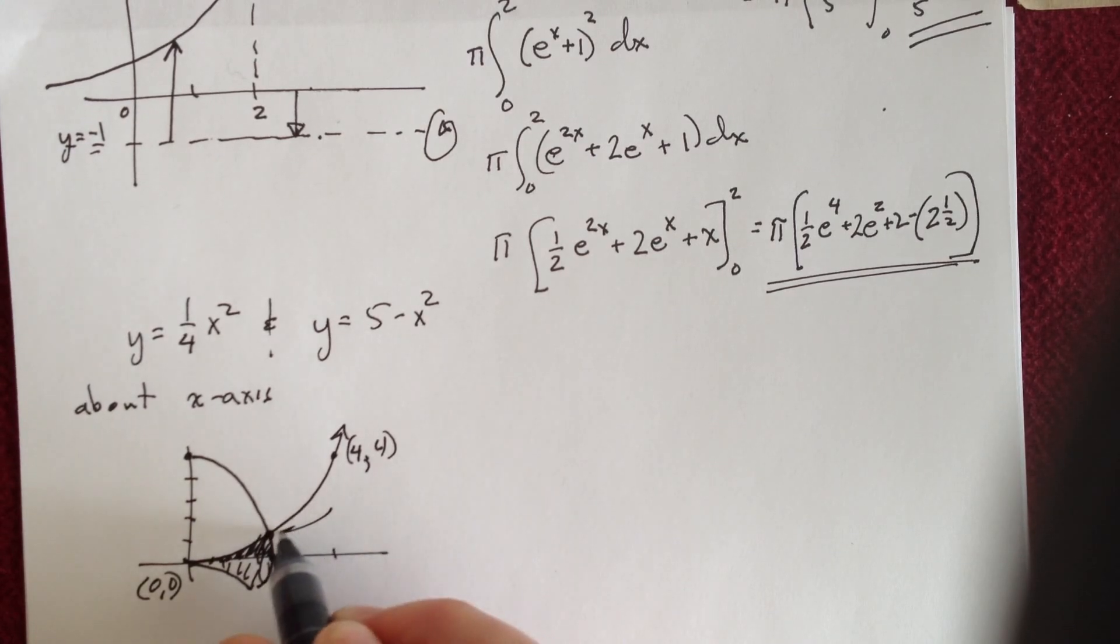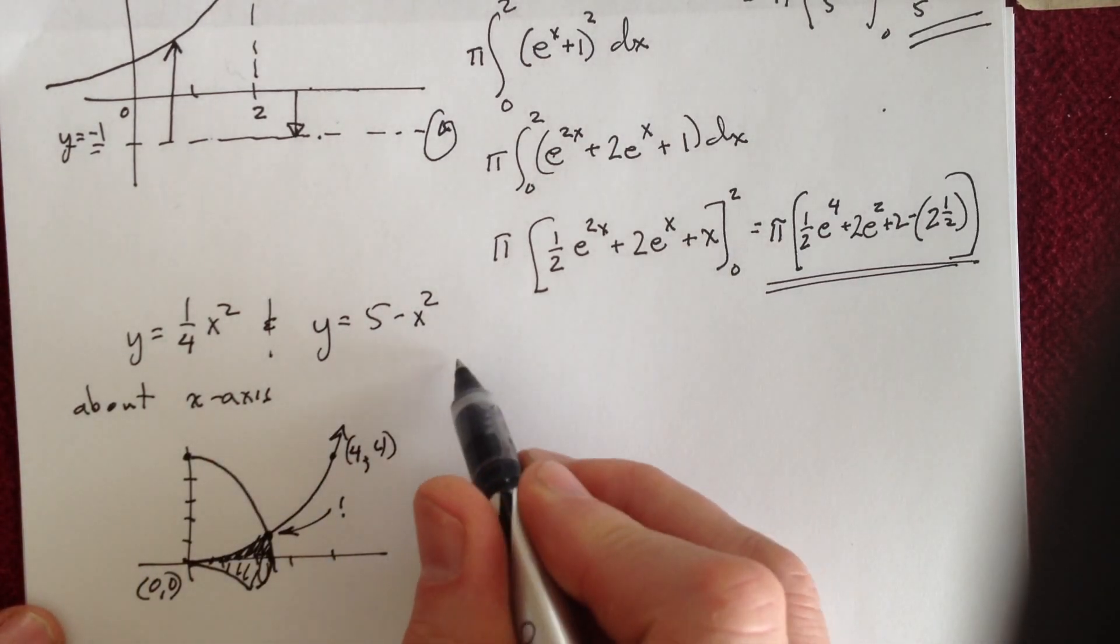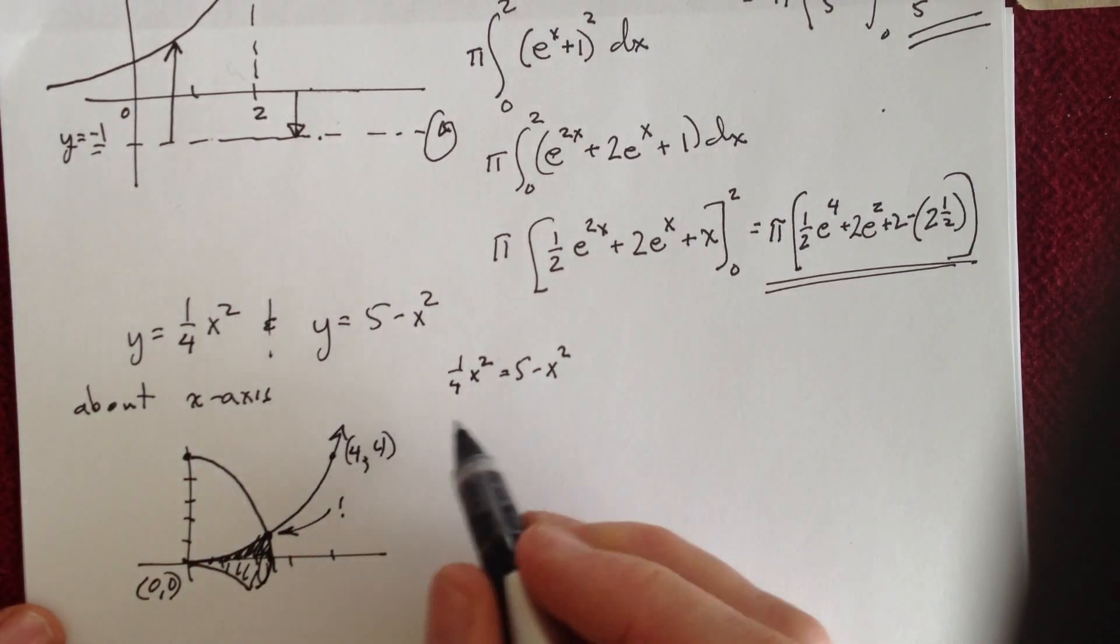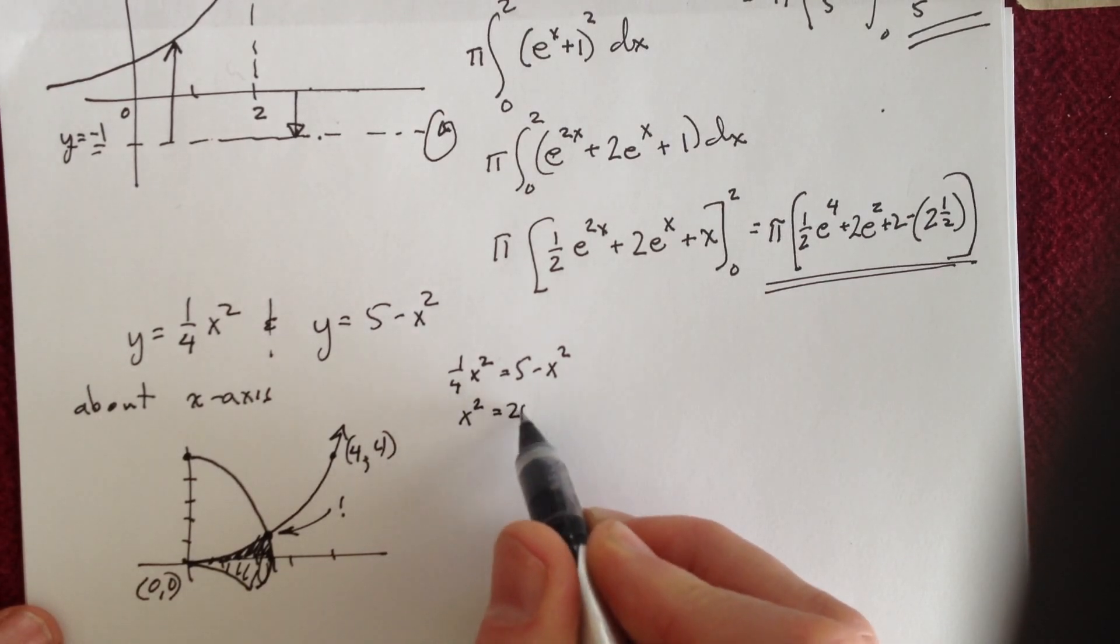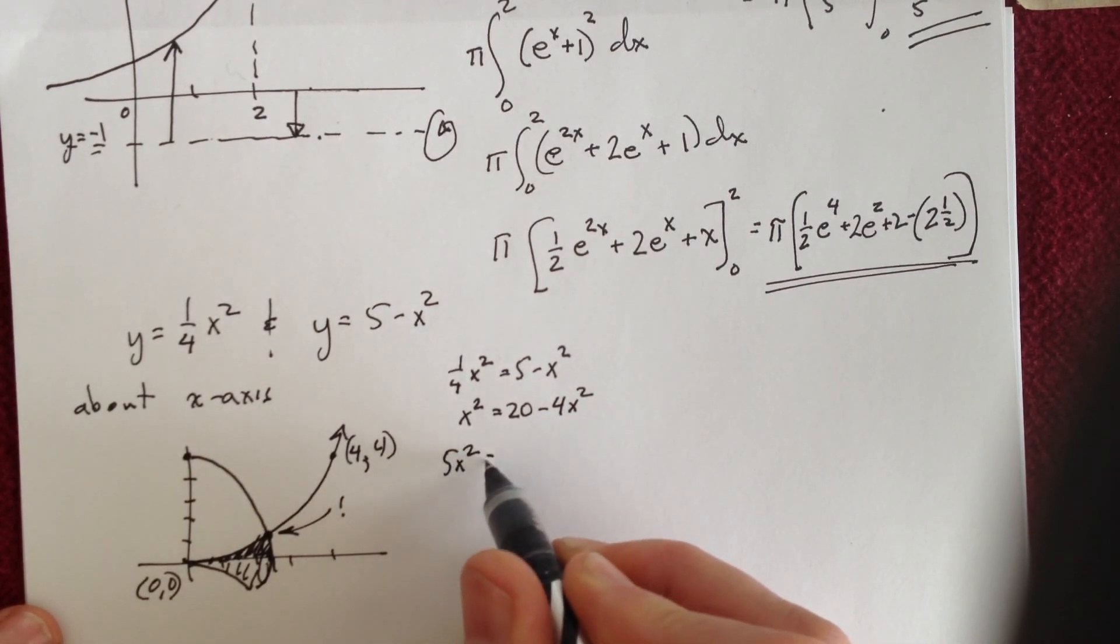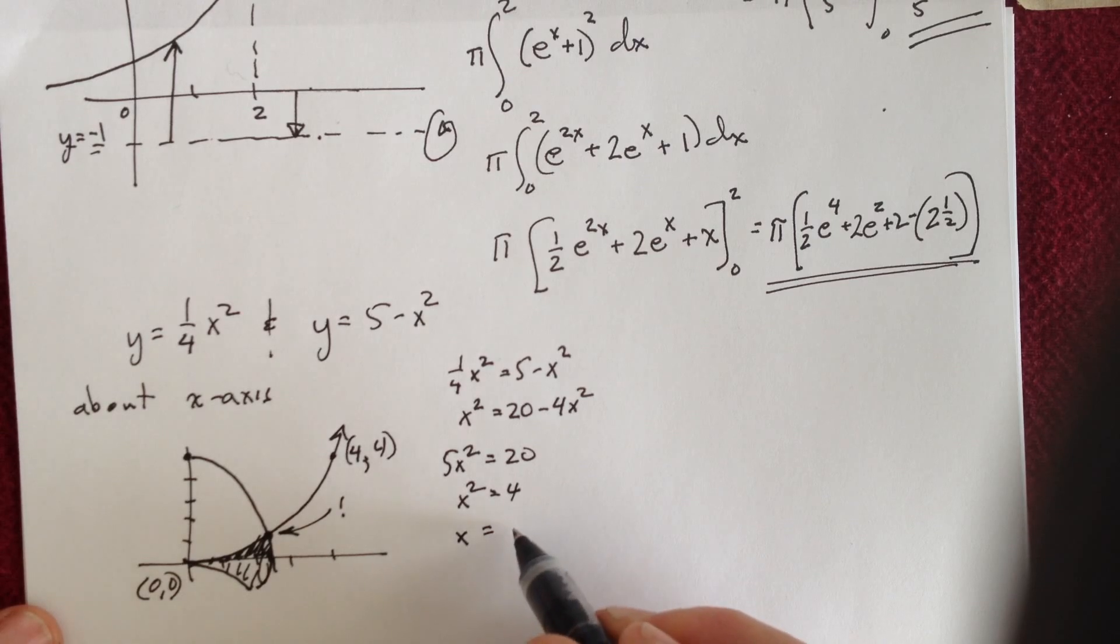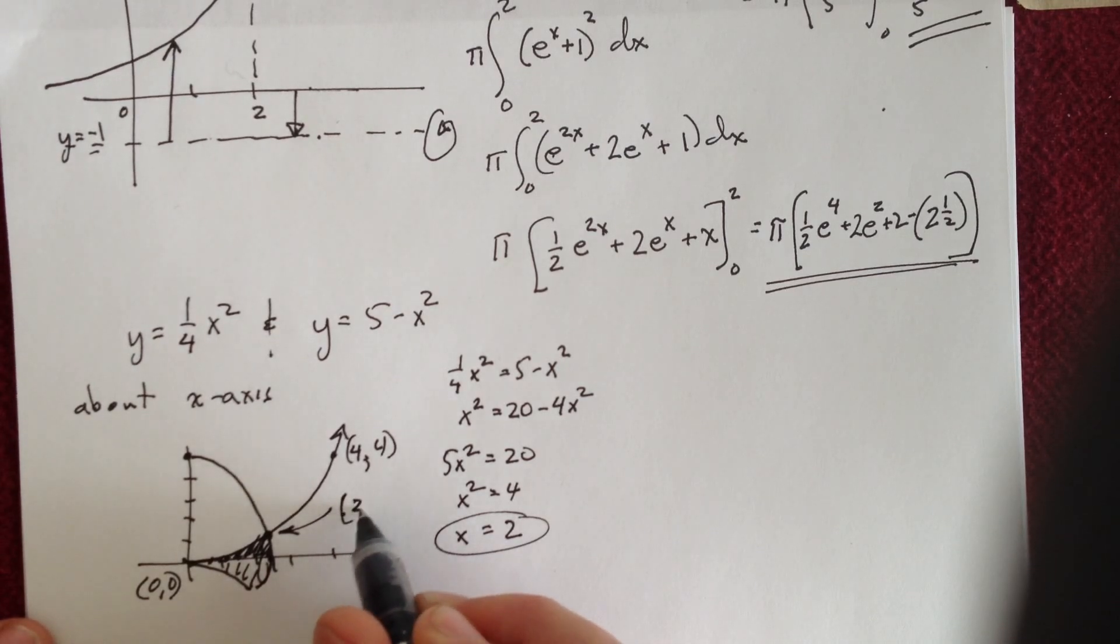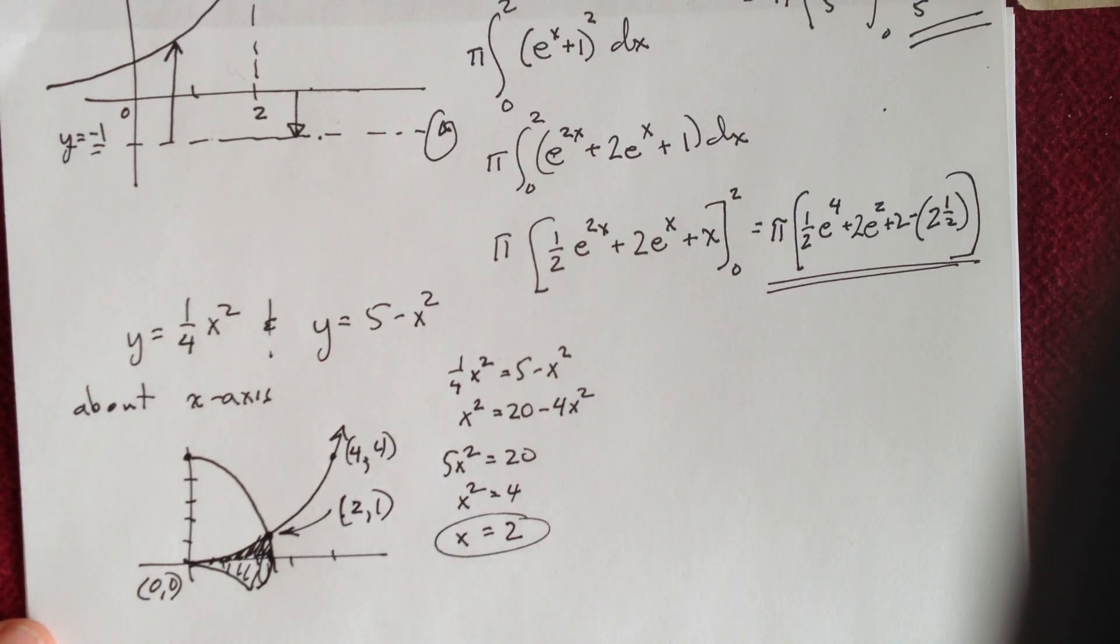We need to find that point of intersection, because we're going to have to break this into two parts. When are these both going to be equal? That's when 1 fourth x squared equals 5 minus x squared. Clear the fractions, just to get rid of fractions, multiply everything by 4, I get x squared equals 20 minus 4 x squared. Move the 4 x squared over, so I get 5 x squared equals 20, and then divide by 5, and then square root, and it's plus or minus 2, but I'm just interested in the plus, so that's the point of intersection. This is going to be at 2 comma, and when I plug in 2, I get 1, so we're going to have to do this as two separate integrals.